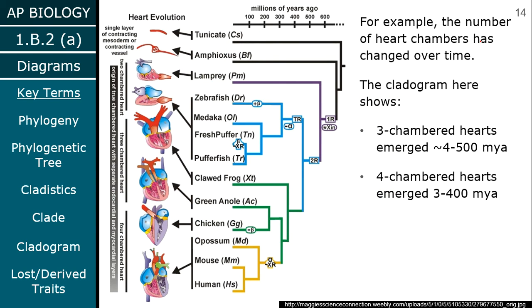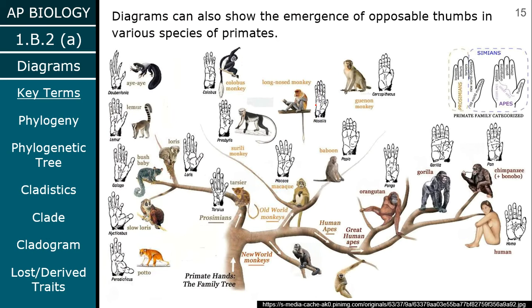Number of heart chambers, for instance, has changed over time. The cladogram shows different categories of hearts — three-chambered hearts versus four-chambered hearts. You don't need to memorize that; it's just another example of a trait that changes over time.